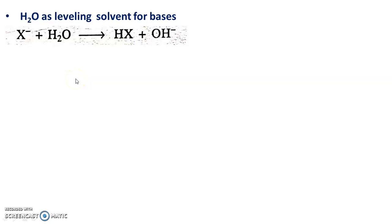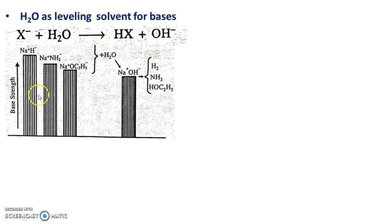Hence, strong bases like hydrides, amides, and ethoxides are leveled to the base strength of hydroxide ion OH- in aqueous solution. For example, sodium hydride, sodium amide, or sodium ethoxide when added in water all produce sodium hydroxide, and the concentration of OH- will be the same. Therefore, these three strong bases are leveled in water.